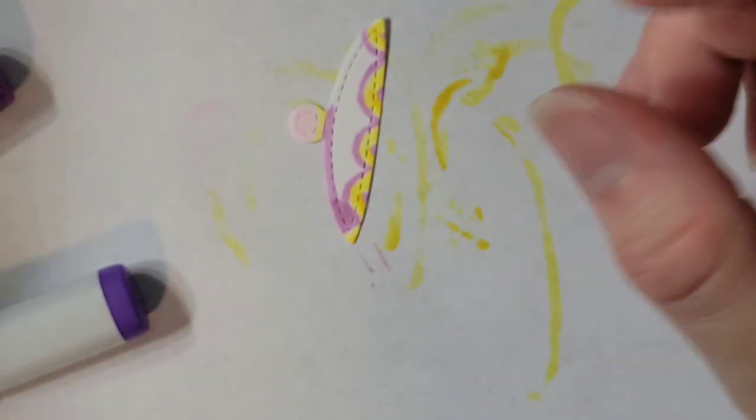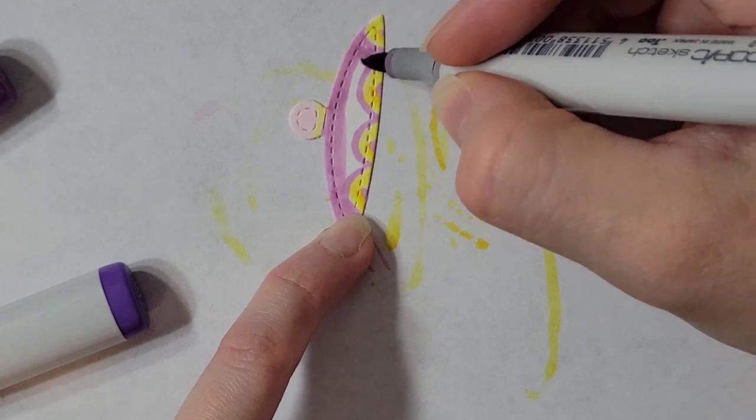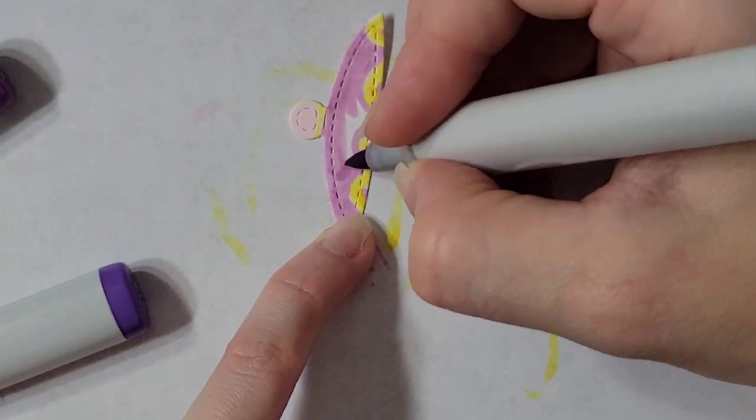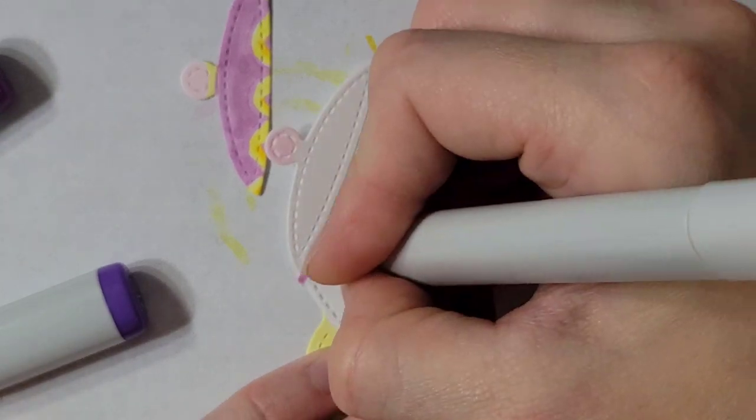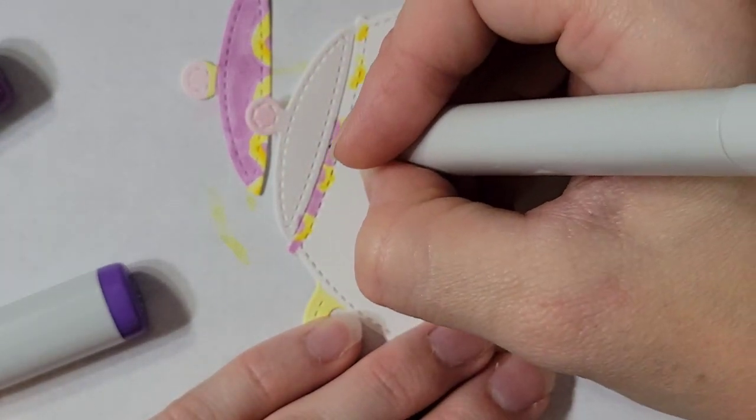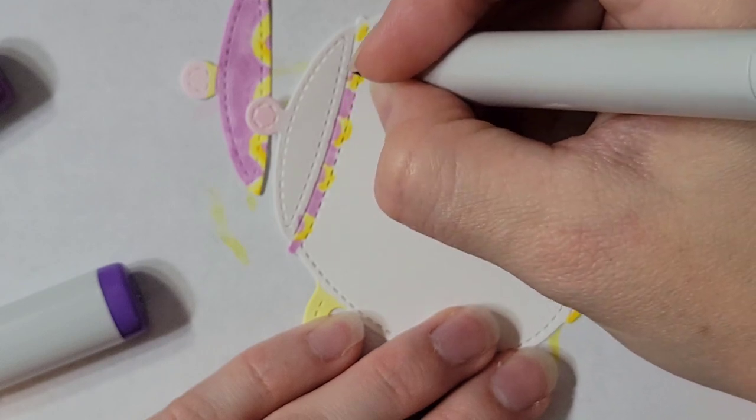I ended up missing recording that part, but I did try to keep the shading towards the underside of the little ruffles and towards the bottom of the leaf detail.